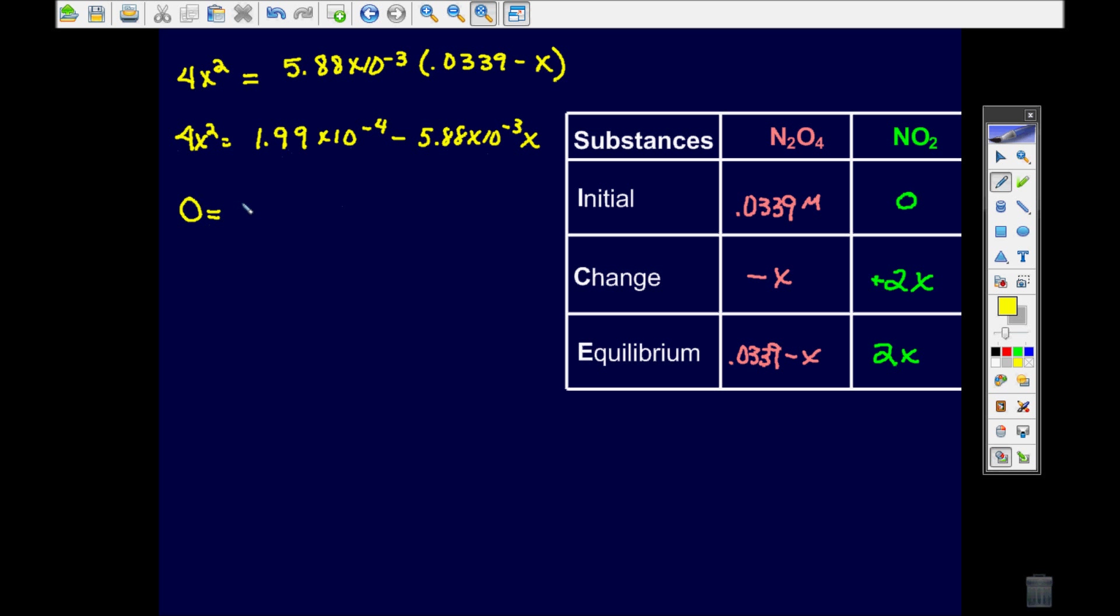So I'm going to write it in quadratic form. Since this has the X component, I'm going to put it next. Negative 4X squared minus 5.88 times 10 to the negative 3 X plus 1.99 times 10 to the negative 4. So here is my quadratic and you're going to have to use the quadratic formula in order to solve for this.